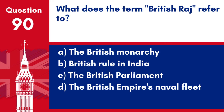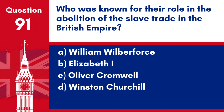Answer: b. British rule in India. The British Raj is the term used for the period of British colonial rule in the Indian subcontinent between 1858 and 1947.